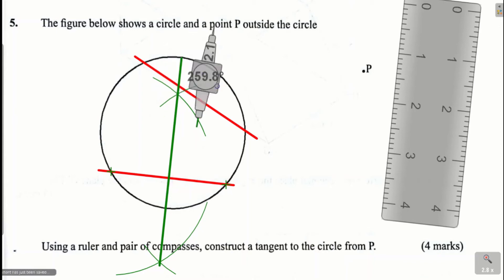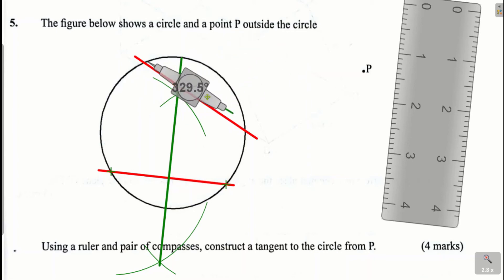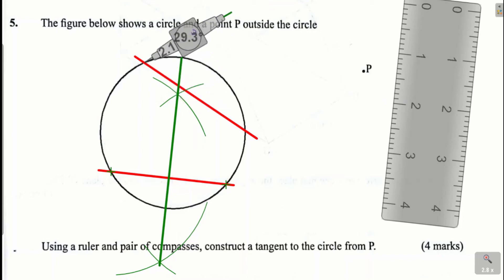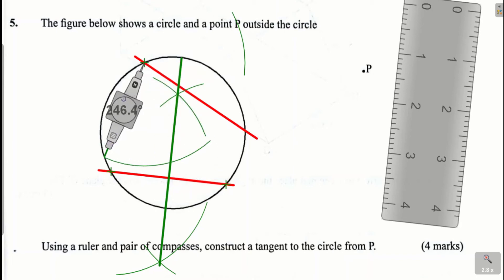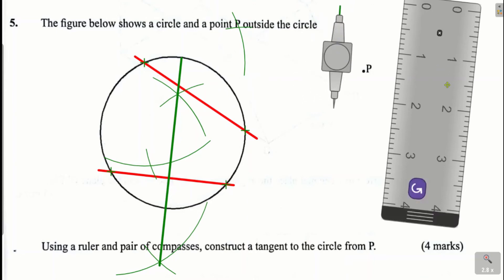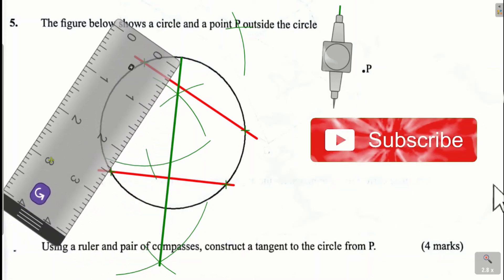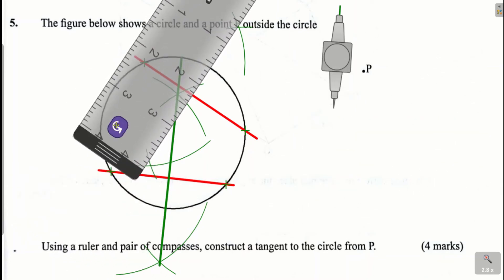We want to construct the perpendicular bisector of the second chord as well. Stand at one end of the chord, then with the same radius mark an arc below. Go to the other end of the chord and with the same radius cut that arc below and the other one at the top. Then take a ruler and join the points of intersection of those arcs using a straight line to bisect that chord. Be very careful here.